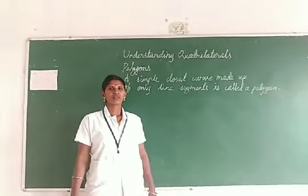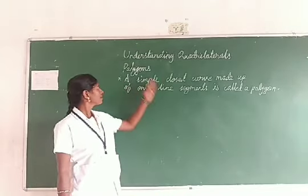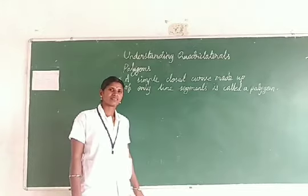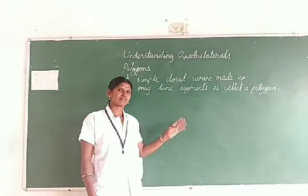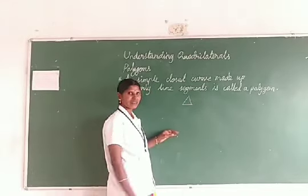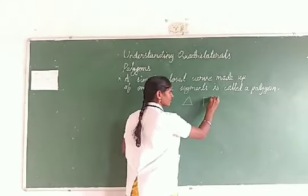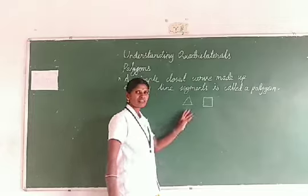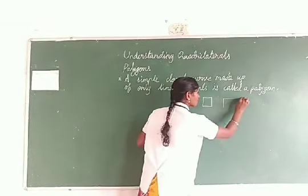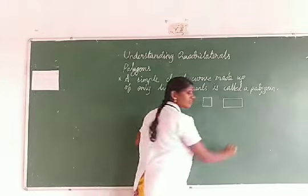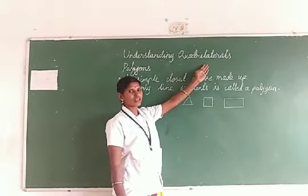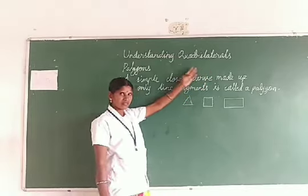Good morning students. Today we are going to see the topic: Understanding Quadrilaterals. You know the quadrilaterals? You know the shapes? If it has three sides, it is a triangle. Four sides — if all the sides are the same, it is a square. Opposite sides are equal — rectangle. We are going to see about quadrilaterals.